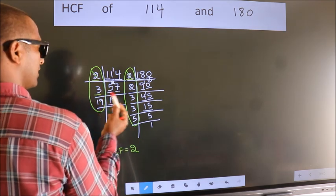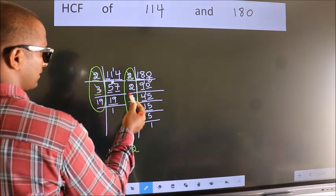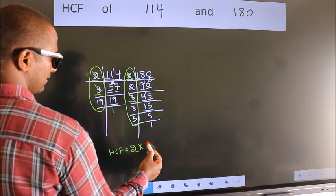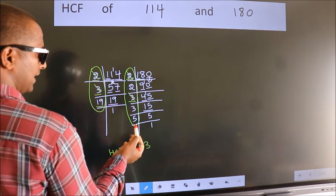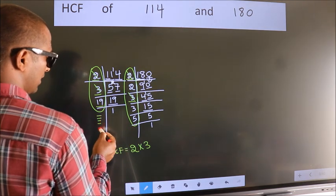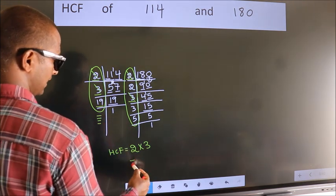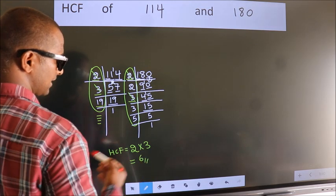Next number 3. Do we have 3 here? Yes. So cut 3 right here. Next number 19. Do we have 19 here? No. No more numbers have been left out. So our HCF is 2 times 3, 6, is our pure HCF.